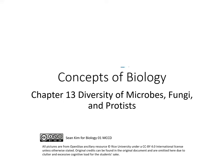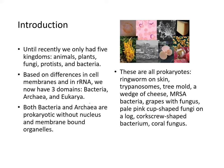We will discuss chapter 13: diversity of microbes, fungi, and protists today. Until recently we only had five kingdoms: animals, plants, fungi, protists, and bacteria. Based on differences in cell membrane and ribosomal RNA, we now have three domains: bacteria, archaea, and eukarya.